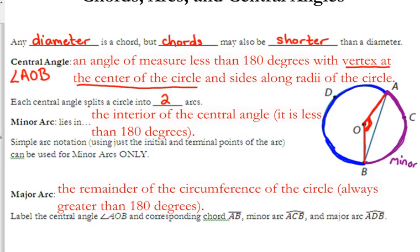So the purple is the minor. The blue is the major. Notice the minor is smaller. Half of your circle would be 180 degrees. That is less than half of the circumference of the circle. So the major arc is obviously more than half of the circumference of the circle.